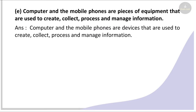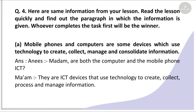Computers and mobile phones are pieces of equipment used to create, collect, process, and manage information — replace 'pieces of equipment' with 'devices.' So: computers and mobile phones are devices used to create, collect, process, and manage information.